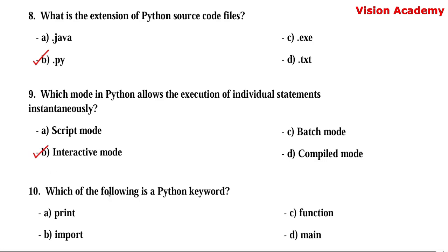Question number 10. Which of the following is a Python keyword? Option A: print. Option B: import. Option C: function. Option D: main. Here, option B — import — is the keyword.